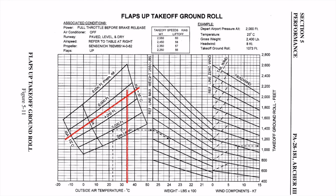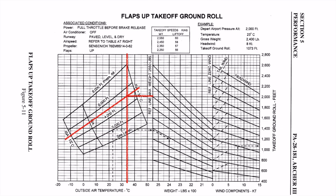Using our chart, find where 5,000 feet and the current temperature of 34 degrees Celsius meet. Now draw a horizontal line all the way to the next section of the chart. The next section uses weight. To provide a margin of error, we'll round 2,460 pounds pessimistically to 2,500 pounds. Draw a vertical line at the 2,500-pound point on the grid, then — starting at the horizontal line drawn before — parallel the weight references until we get to 2,500. Where these two lines cross, draw a horizontal line all the way to the wind reference.